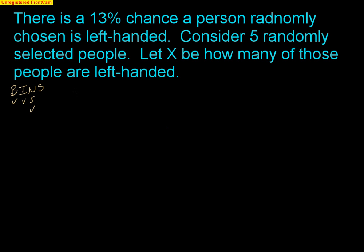So the first thing I want to do is identify in this problem what I call P. P is the probability of success — 0.13. We therefore have Q. Q is the probability of failure, which is pretty easy to find: 0.87. Success to me is being left-handed; failure is anything else. So there are our values.